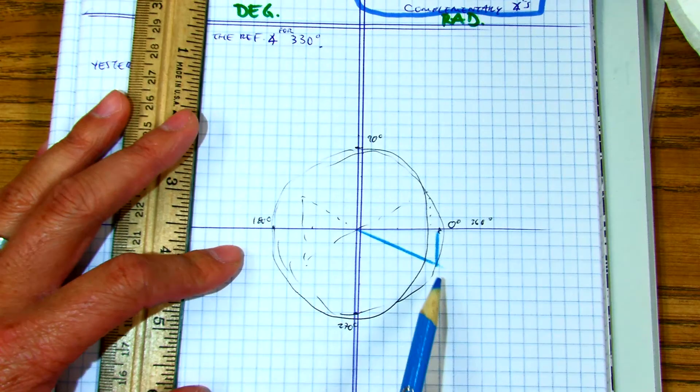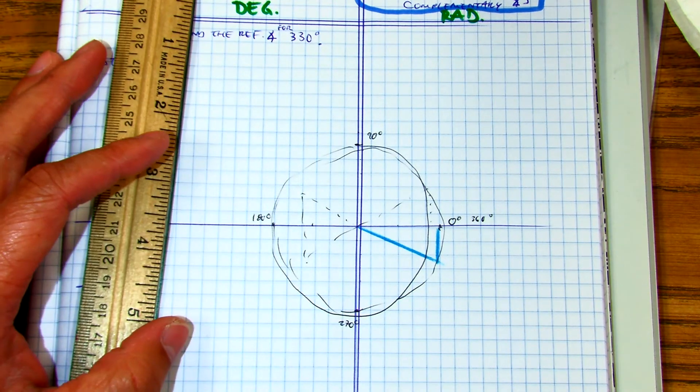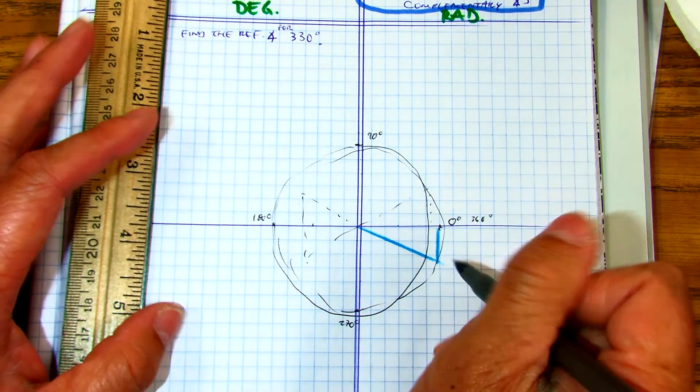A common mistake is if you went this direction. Okay, so there's my bow tie. Okay, so this is 330 degrees.